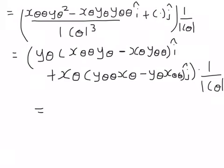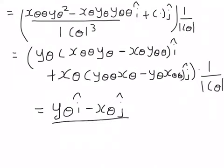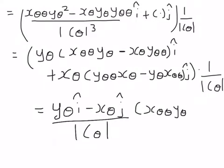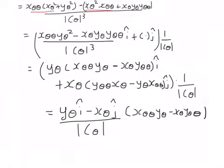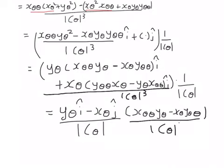We can write the result as (y_θ·i − x_θ·j) divided by |c_θ|, multiplied by the factor (x_θθ·y_θ − x_θ·y_θθ) divided by |c_θ|³. One term we did not write explicitly is the |c_θ| magnitude cubed in the denominator.